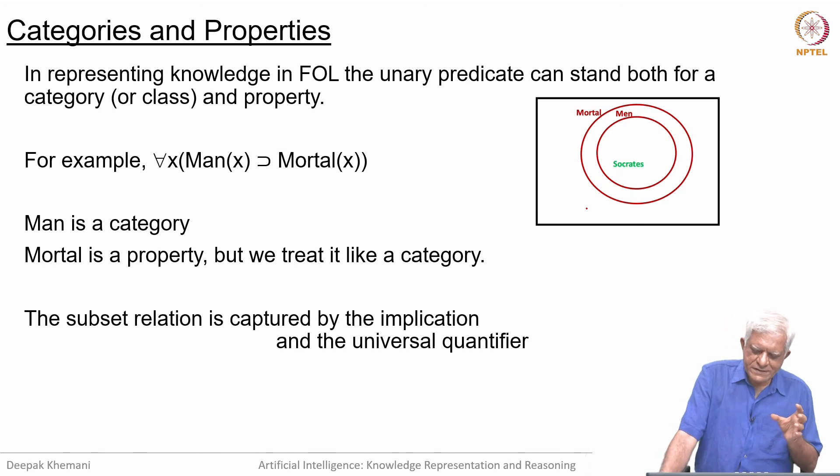The subset relation is captured by the implication. When you say for all x Man(x) implies Mortal(x), then the interpretation of that is that the image of man under the interpretation is a subset of the image of mortal under the interpretation.